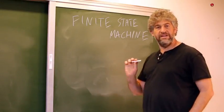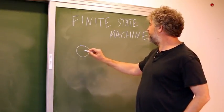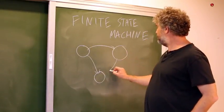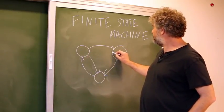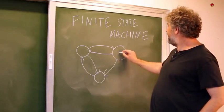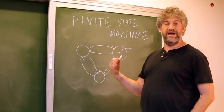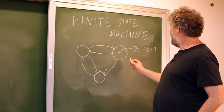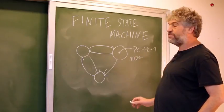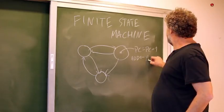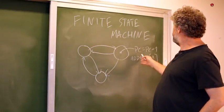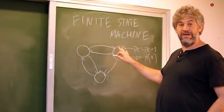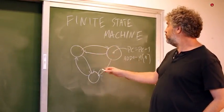The idea is that for every possible state that the machine can be in, you have a circle, and you have arrows between the different circles or different states of the machine that tell you from which state you move to which other state, and why. In each state you can write what the machine needs to do — for example, add one to the program counter, or have a certain address get a certain value from the memory address addressed by A.